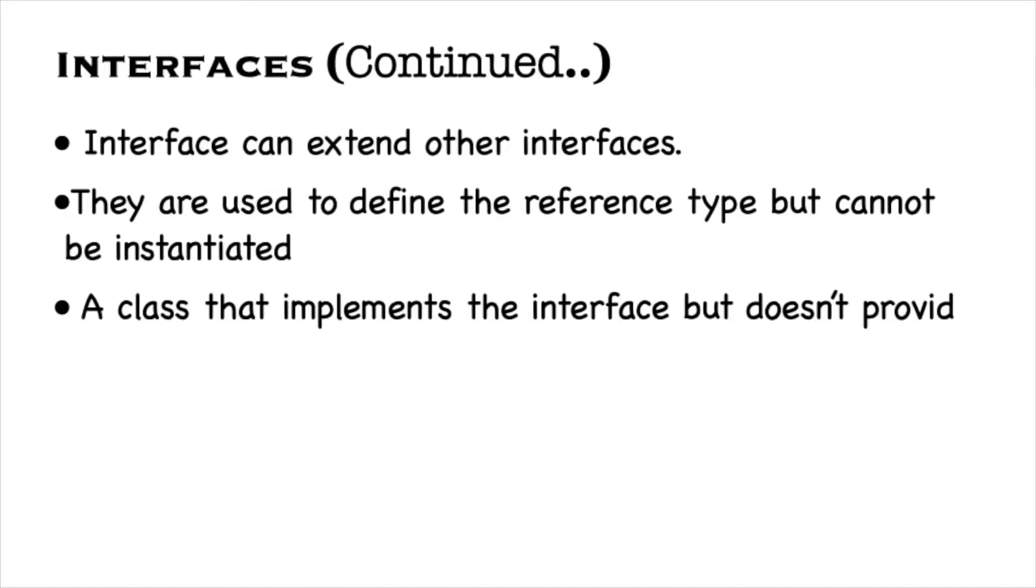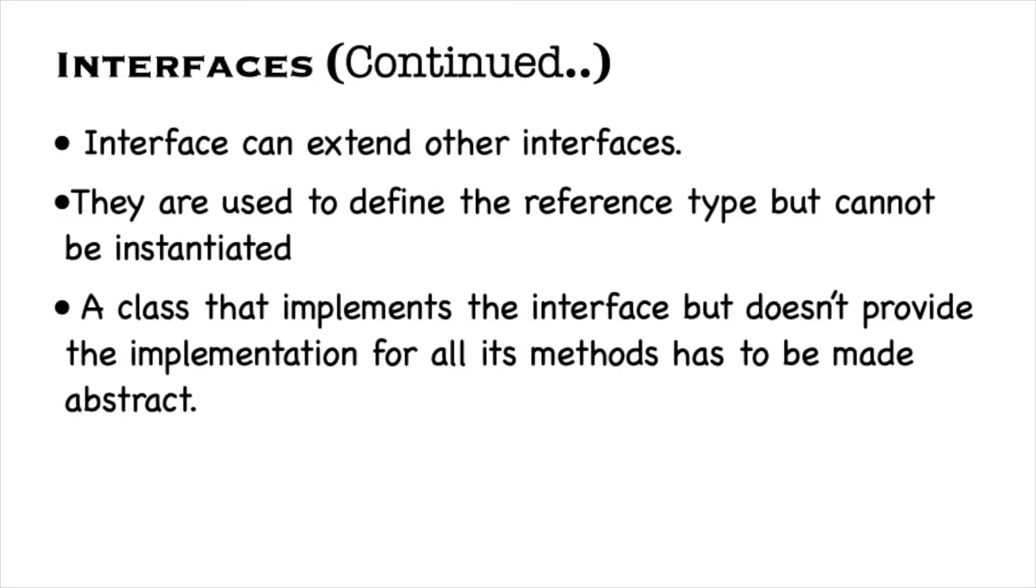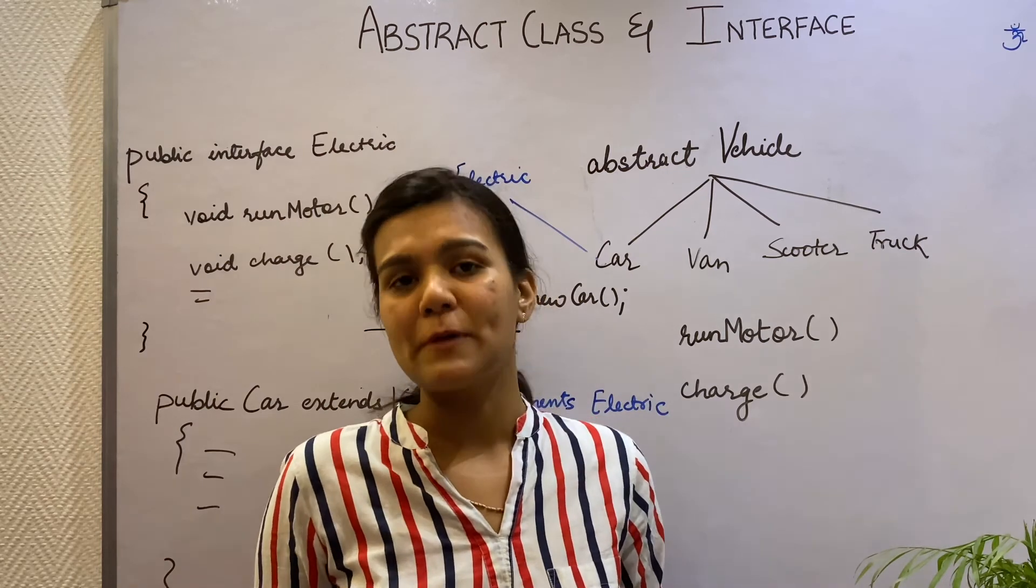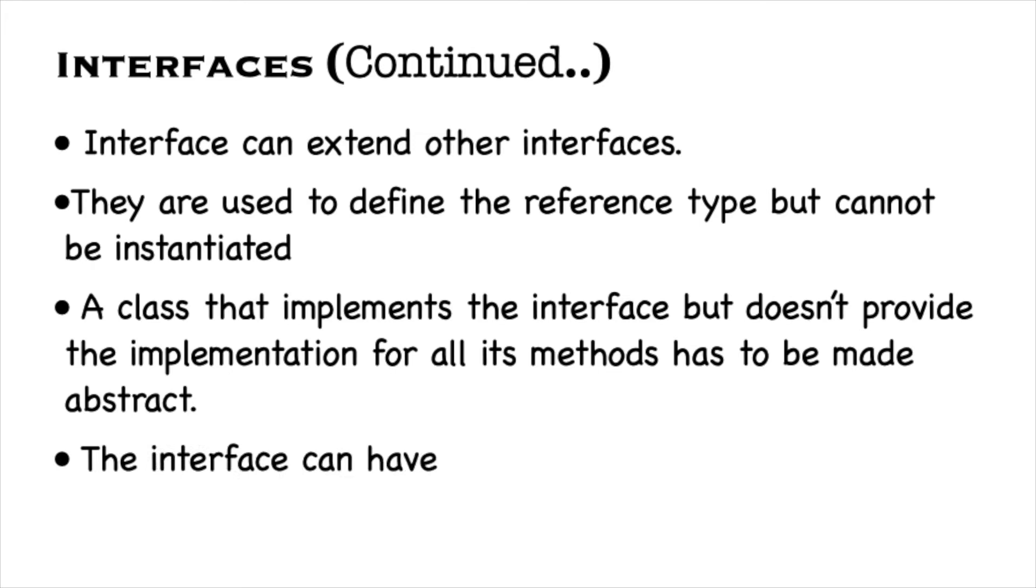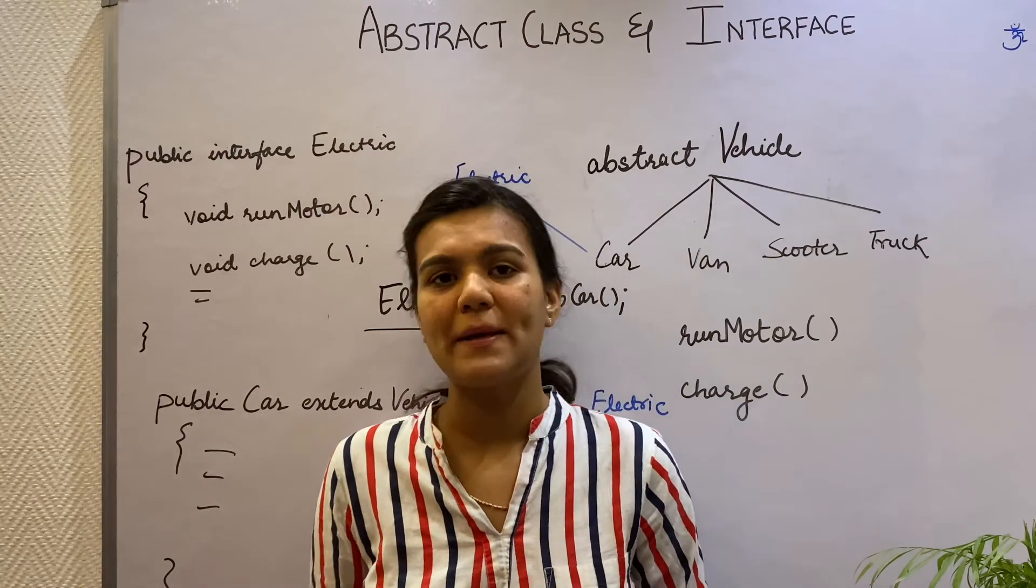Also, any class that includes interface but does not fully provide the implementation for all its methods will have to be an abstract class. The interfaces can have two access specifiers, public and default, because we need classes to implement these interfaces.